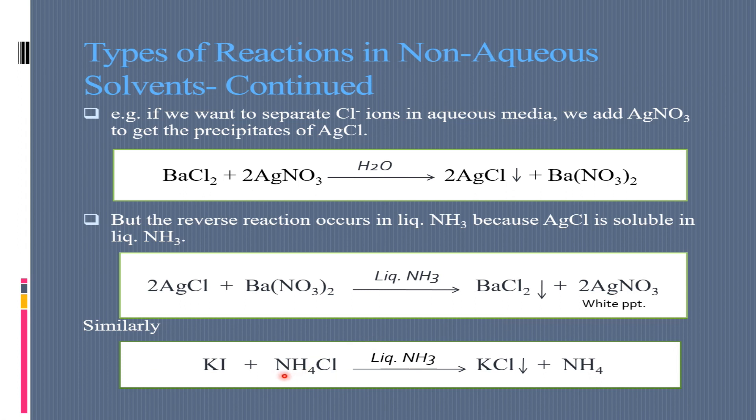When we react potassium iodide and ammonium chloride, we have potassium chloride. The potassium chloride is water-soluble, but liquid ammonia is insoluble.